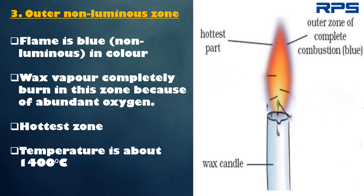In the outer non-luminous zone, the flame is blue in color. Wax vapor burns completely in this region because of a sufficient supply of oxygen. It is the hottest zone of the candle flame, with a temperature of about 1400 degree Celsius.